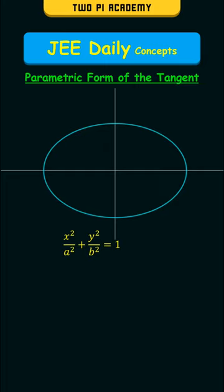Consider an ellipse with the general equation x squared by a squared plus y squared by b squared is equal to 1, where a is greater than b.